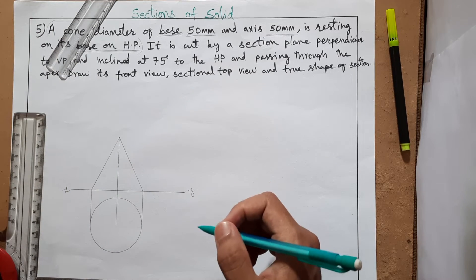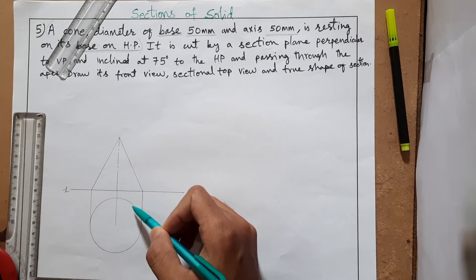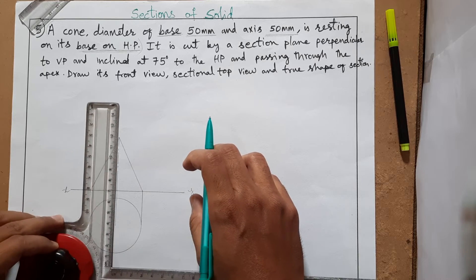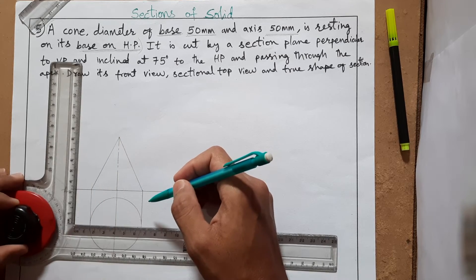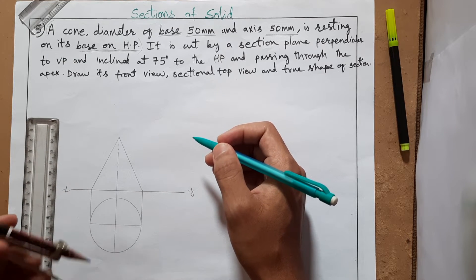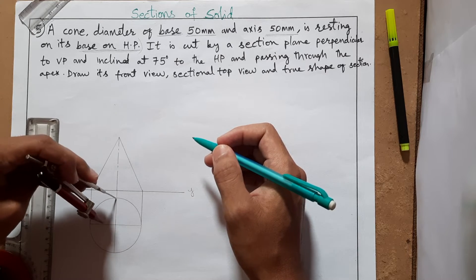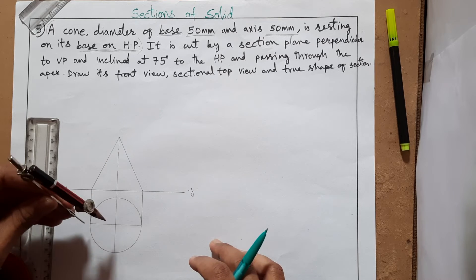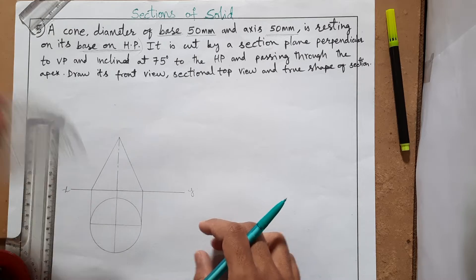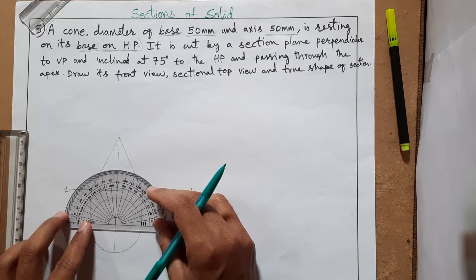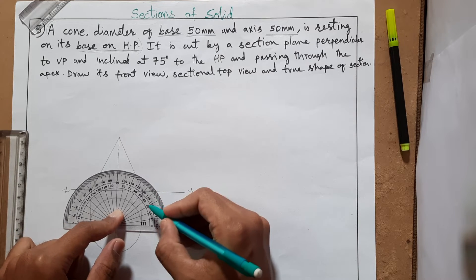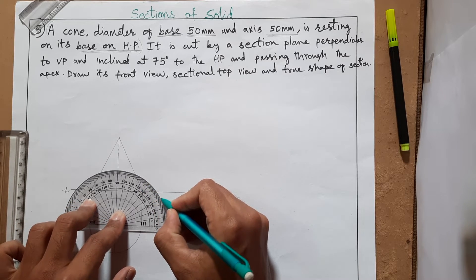The front view and top view of the cone are now completed. Since a cone is a curved surface, we don't have any extra corner points like a pentagon or hexagon would have. To get reference points, we divide the circular base into either 8 or 12 equal parts. You can use a protractor — for 12 points take 30 and 60 degrees, for 8 points take 45 degrees. I will go with 12 parts using 30 and 60 degrees.